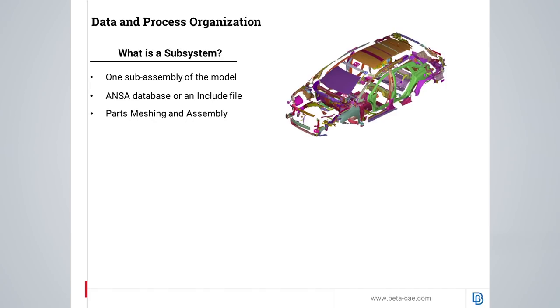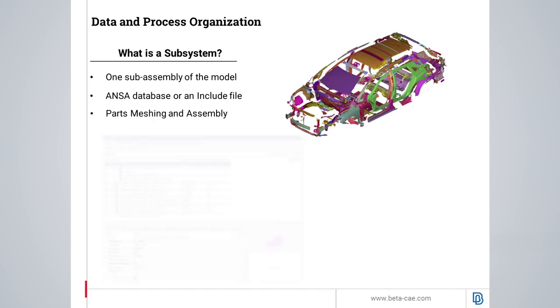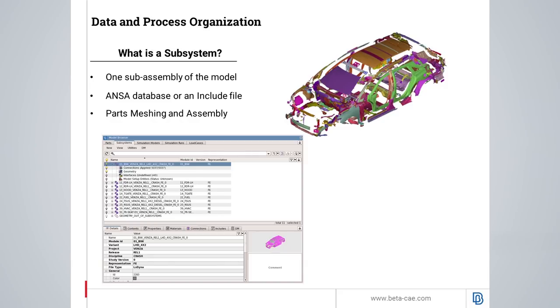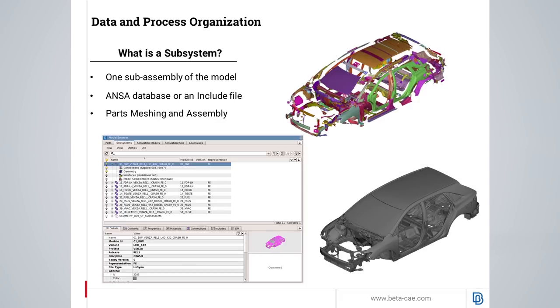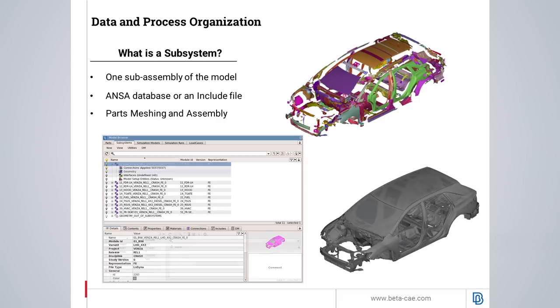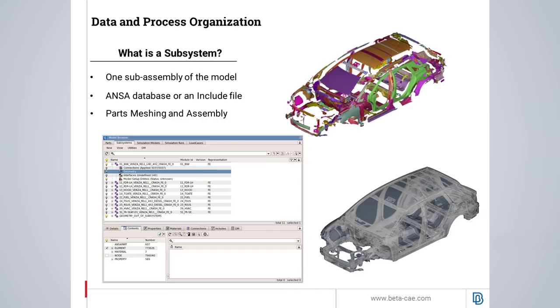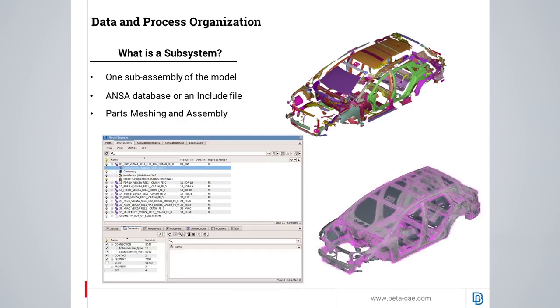In ANZA, the tool that offers the ability to handle the subsystems is the model browser. For example, in the body in white subsystem, the model browser allows a discretization of the available data. The user can examine just the geometry and mesh, and view the connections that connect the internal parts of the subsystem.